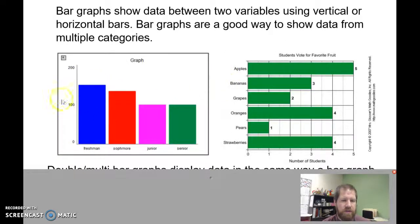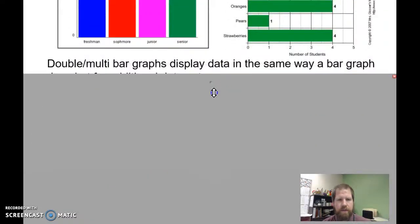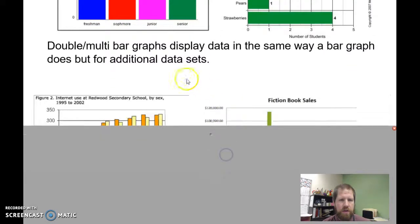So here I have number of students and grade level - two values, two data sets. And here I have type of fruit and number of students that voted for that fruit - again, two data sets.